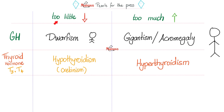Growth hormone: if you have too little, you have dwarfism. If you have too much and it happened during childhood, you'll be a giant — gigantism. But if this happened after you reached adulthood and closed your epiphyses, it will cause acromegaly. The word acro means extremities — your bones get thicker.